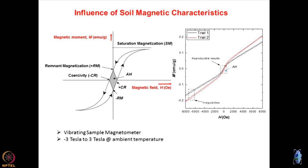The area of the hysteresis curve bounded by Rm becomes a very important parameter — we call this Ah, the area within the hysteretic curve. Normally, depending on the type of vibrating sample magnetometer used, we go from minus 3 tesla to 3 tesla, which is a decent amount of magnetic field at ambient temperature. Once this type of relationship is known, you can do a lot of things with it.